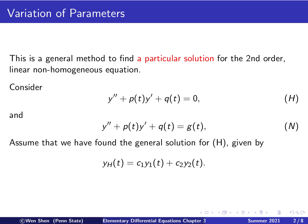Now we assume that the general solution for the homogeneous equation is given. The general solution can be written as a linear combination of two functions, y1 and y2, with constants c1 and c2 in front. Here c1 and c2 are arbitrary constants, and y1 and y2 are two linearly independent functions that both solve the homogeneous equation. The goal now is to find a particular solution to the non-homogeneous equation based on this information.